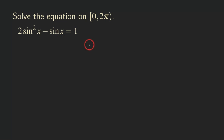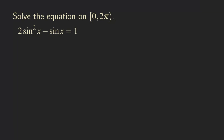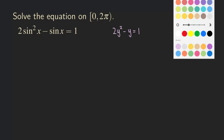The first thing we need to do is ask ourselves what kind of form we have for this equation. If we replace sine x with a different variable, the equation looks like this: 2y squared minus y equals 1, where y represents our sine x.